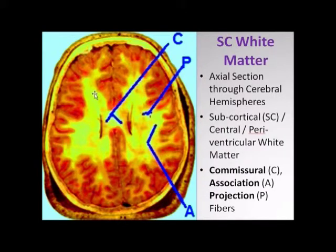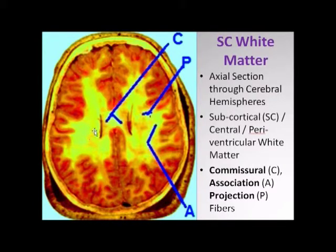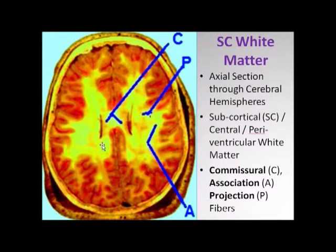But let's focus on this white matter here. This is referred to as the subcortical white matter, which becomes confluent with the central white matter and which merges with the periventricular white matter. This whole thing is composed of nerve fibers which are myelinated, and that's why it's referred to as the white matter.